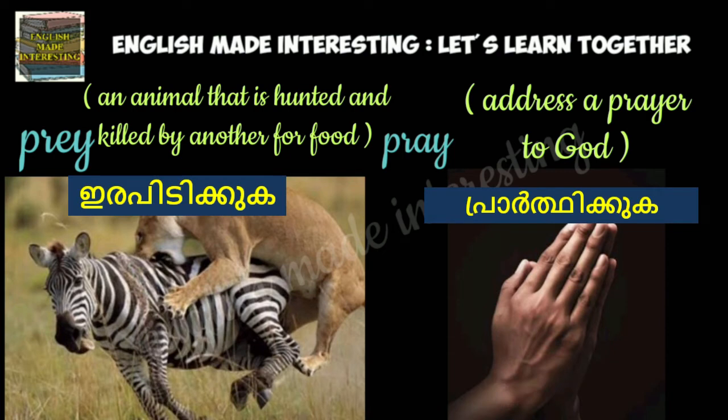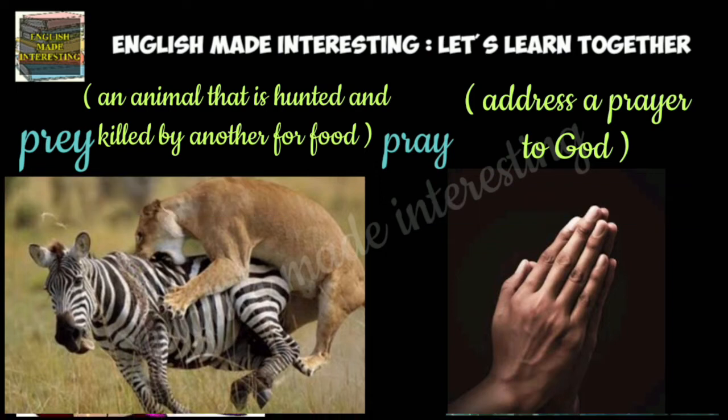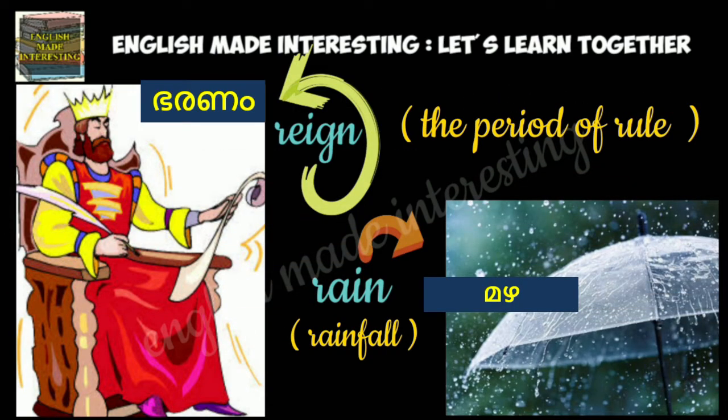P-R-E-Y, 'prey', is an animal that is hunted and killed by another for food. P-R-A-Y, 'pray', is to address a prayer to God. R-E-I-G-N, 'reign', is the period of rule. R-A-I-N, 'rain', which means rainfall.